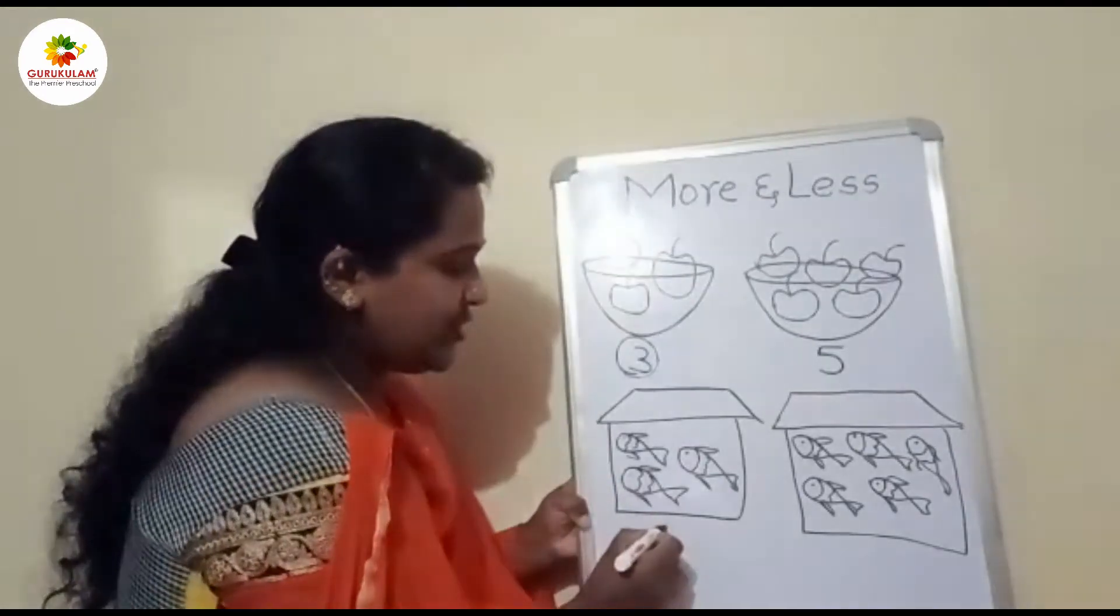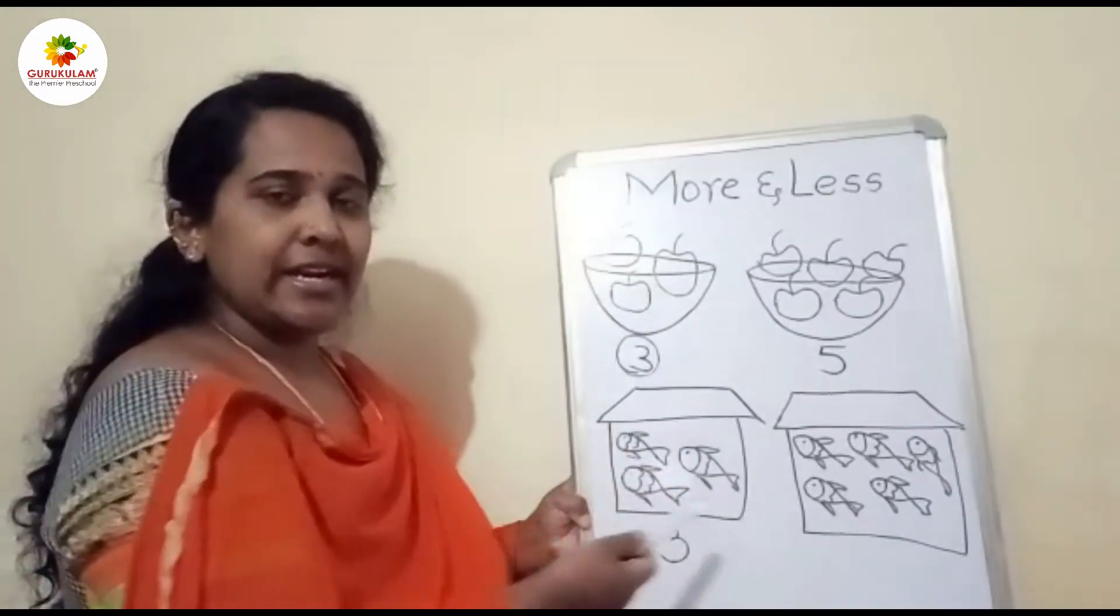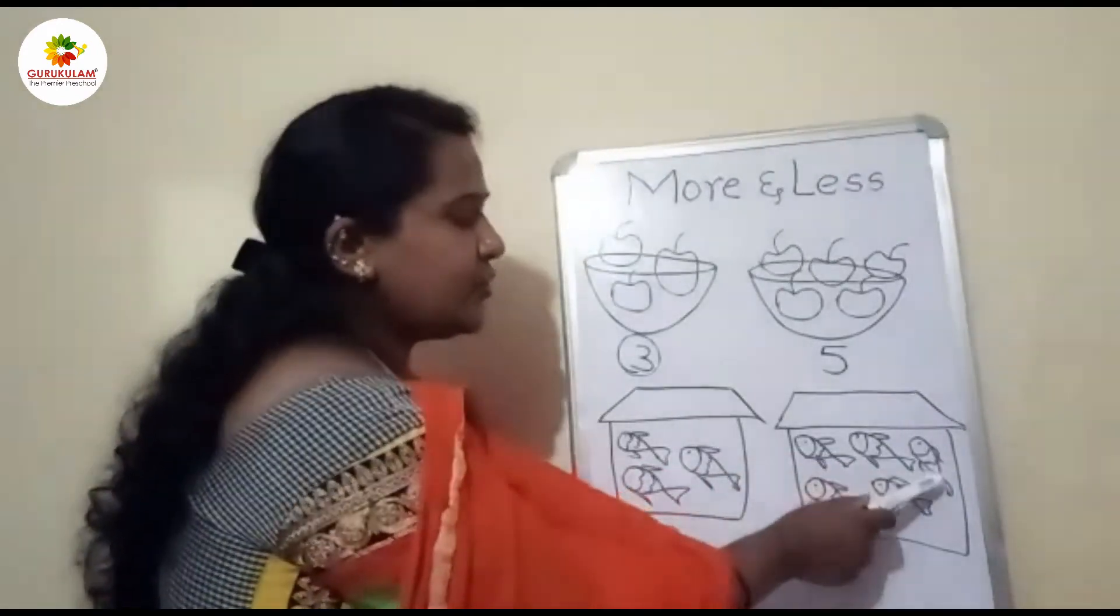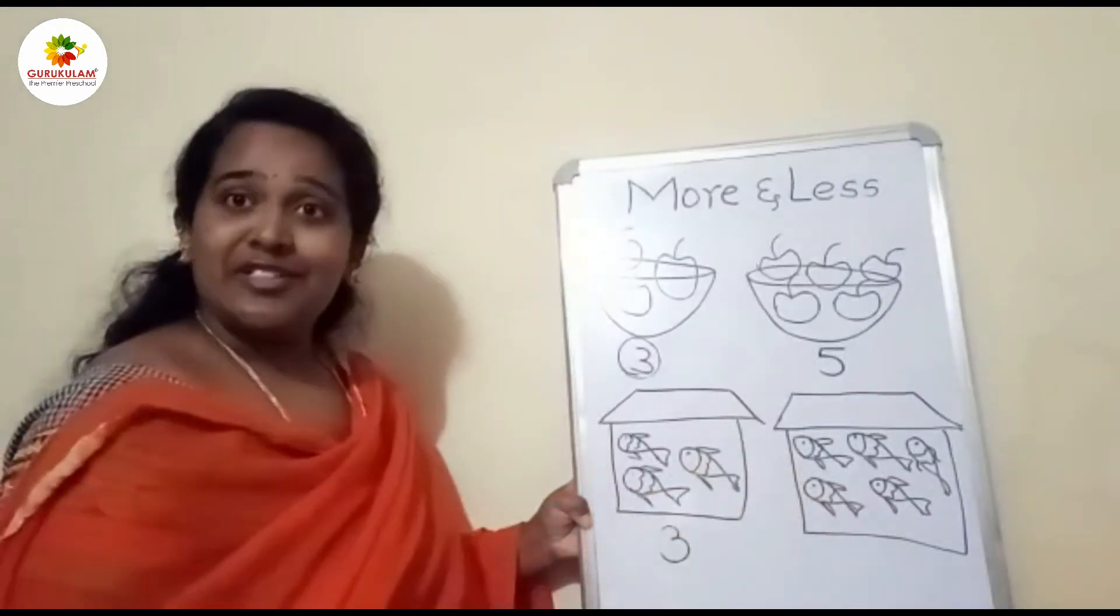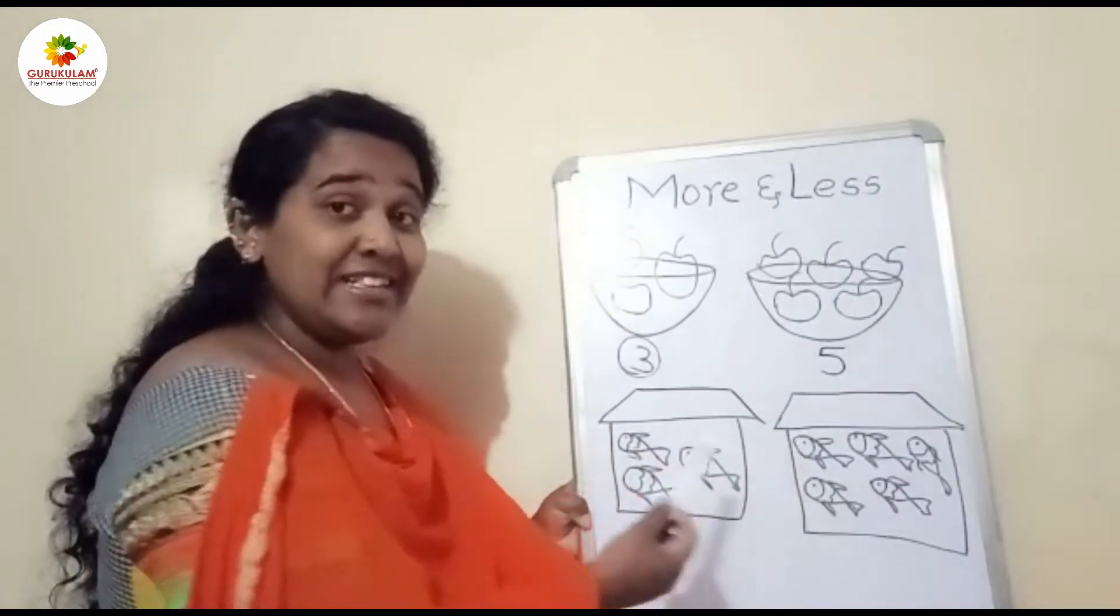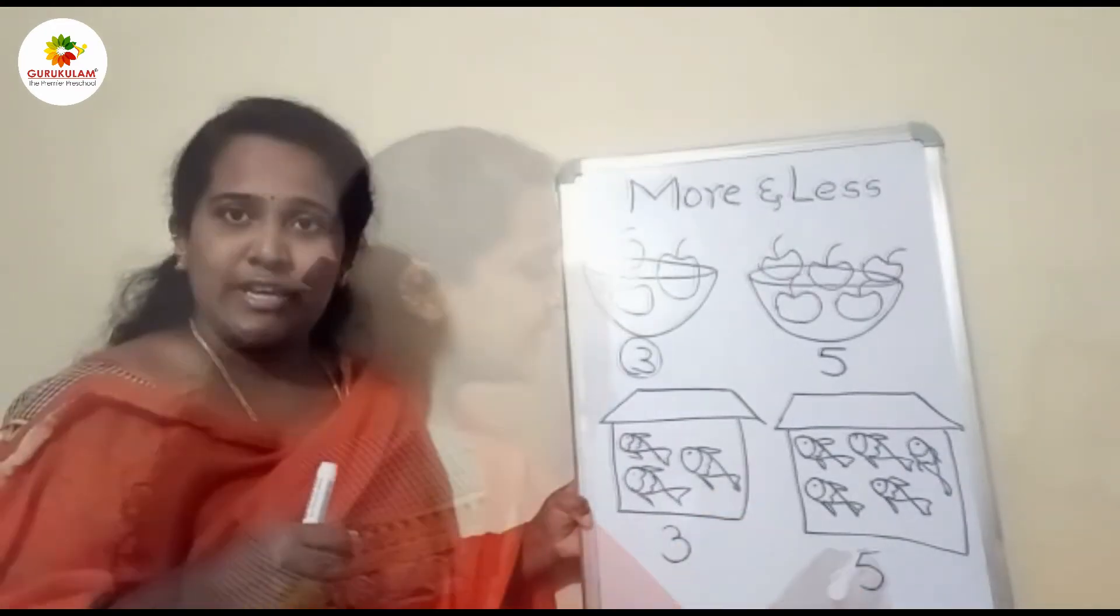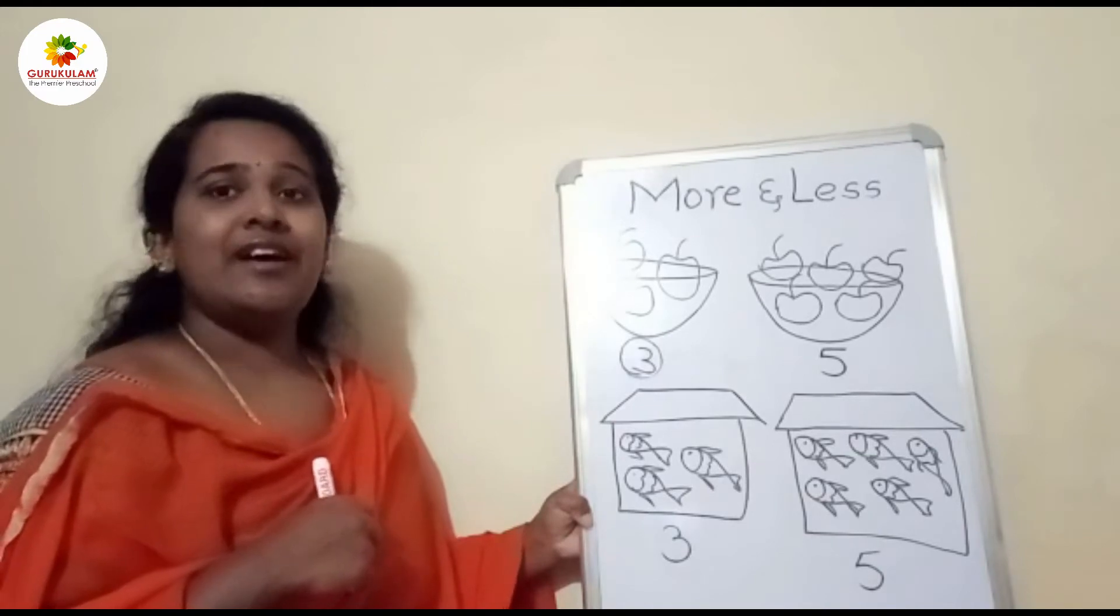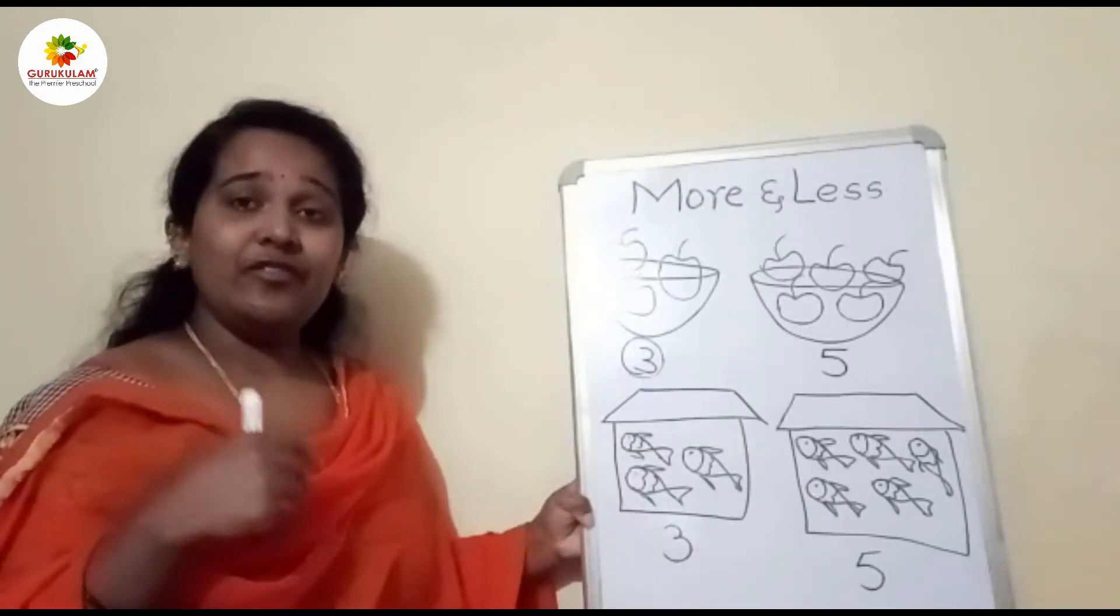Okay, let's count another aquarium: one, two, three, four, five. Five children. In another aquarium we have five fishes. Can you tell me in which aquarium we have more fishes? Yes, in second aquarium we have more fishes. In first aquarium we have less fishes.